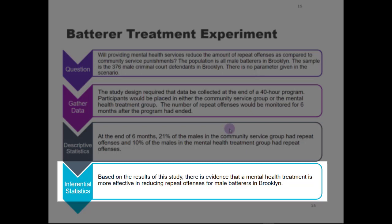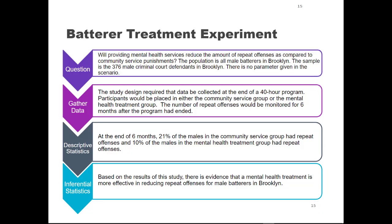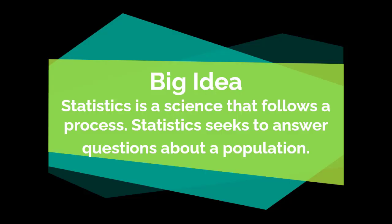Now, is this a guarantee? Of course not — we don't have a way to certainly control people's behavior — but there is evidence that supports it. It's not proof, but there is evidence. So again we went through the four phases of the statistical process, identified the population and the sample, determined if there was a parameter given, and identified what the statistics were. Today's big idea is that statistics is a science that follows a process and seeks to answer questions about a population. Don't forget to check your emails, check Blackboard, do your homework, and subscribe to this channel. This is your teacher Torres saying stay safe, and I will be waiting to give you a virtual elbow bump in the next video — ciao!